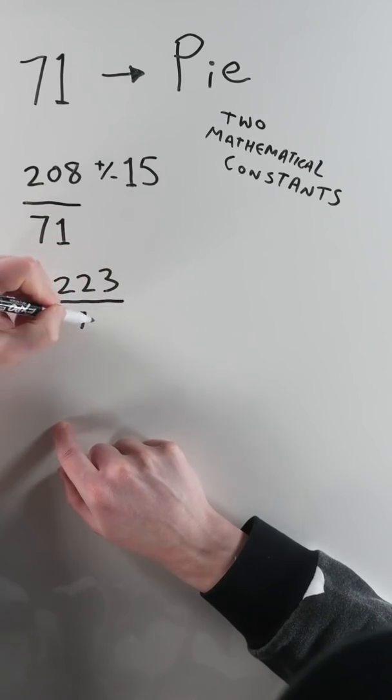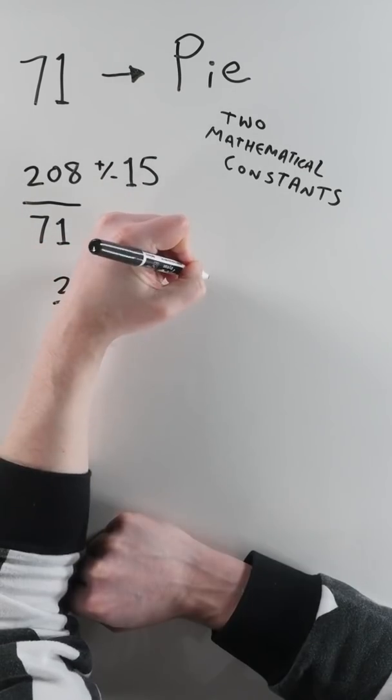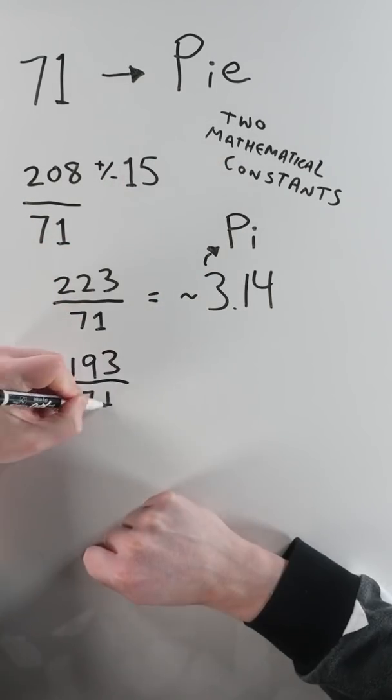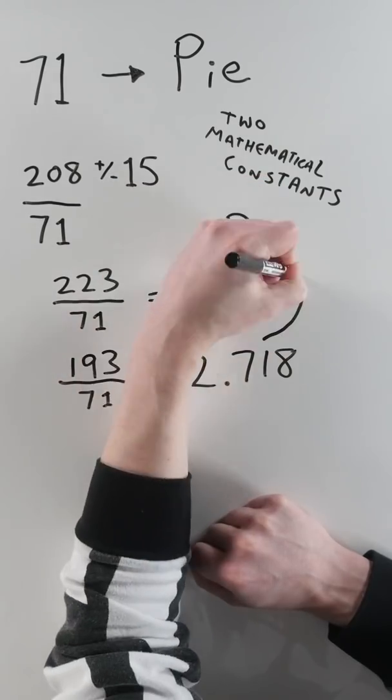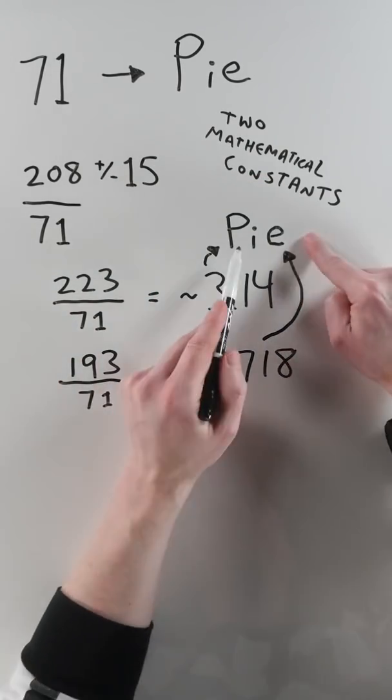208 plus 15 equals 223 over 71 gives me 3.14 for pi. 193 over 71, which is Euler's number E. Pi plus E equals pie.